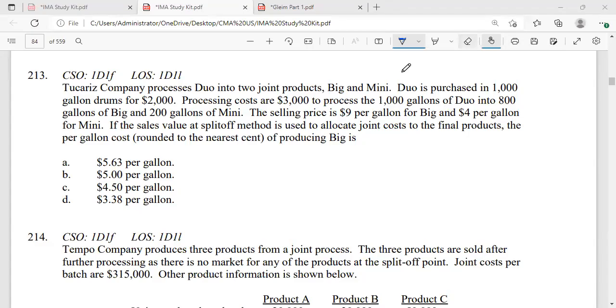Now in this particular question, let us read the requirement first. If the sales value at split-off method is used to allocate joint cost to the final products, the per-gallon cost of producing Big is—it's asking per-gallon cost, not the total cost. Tea Company processes Duo into two joint products, Big and Mini.